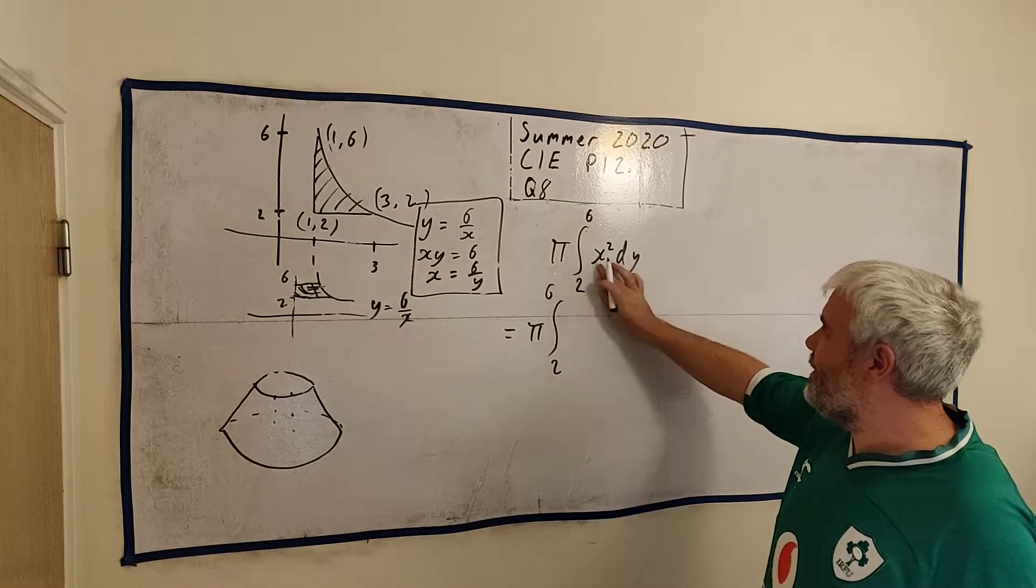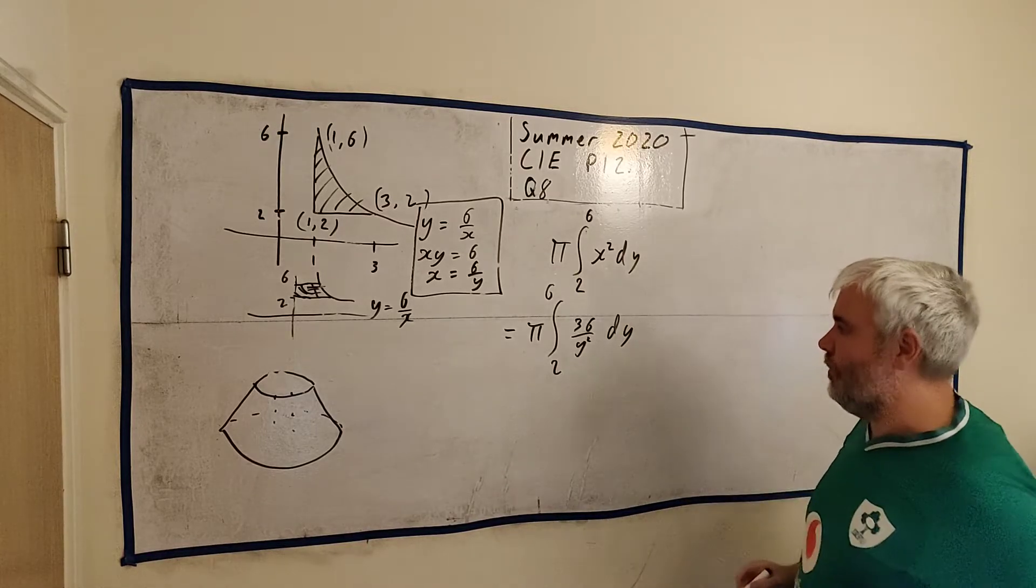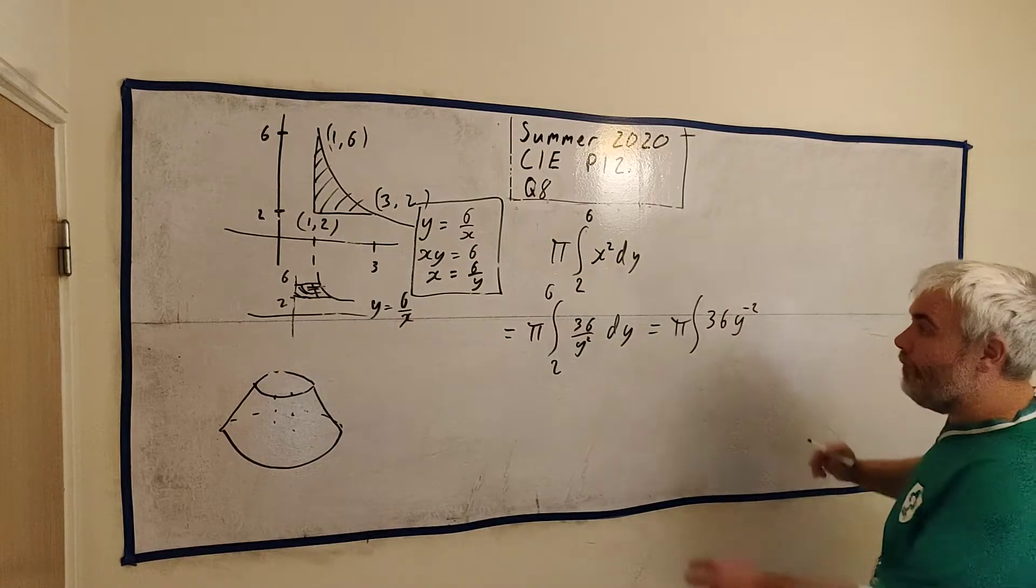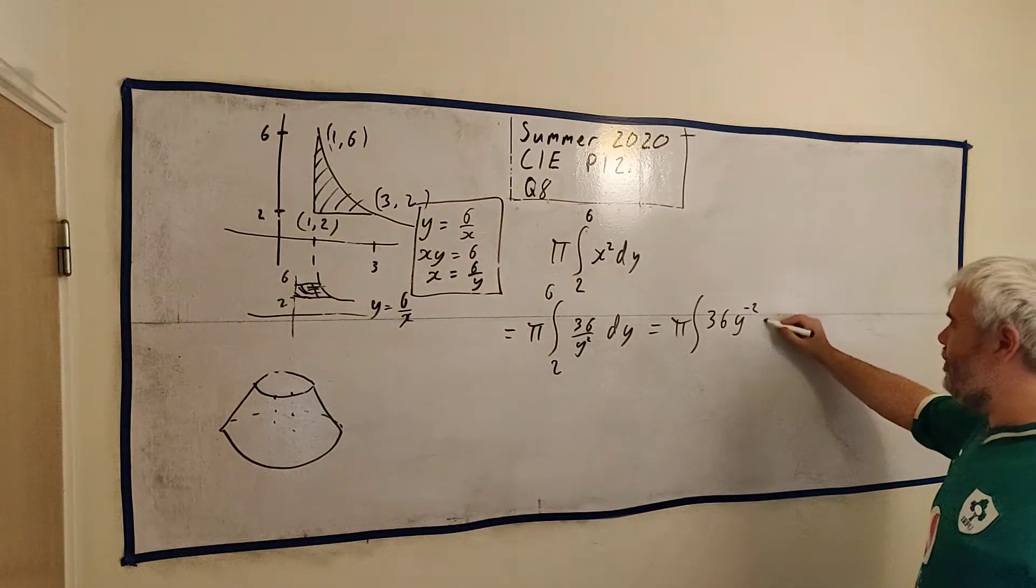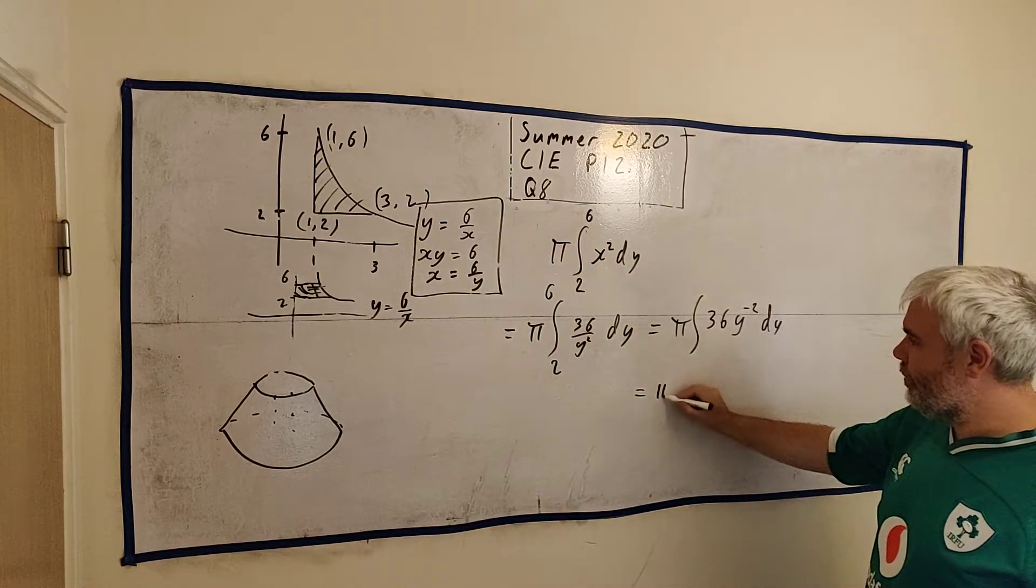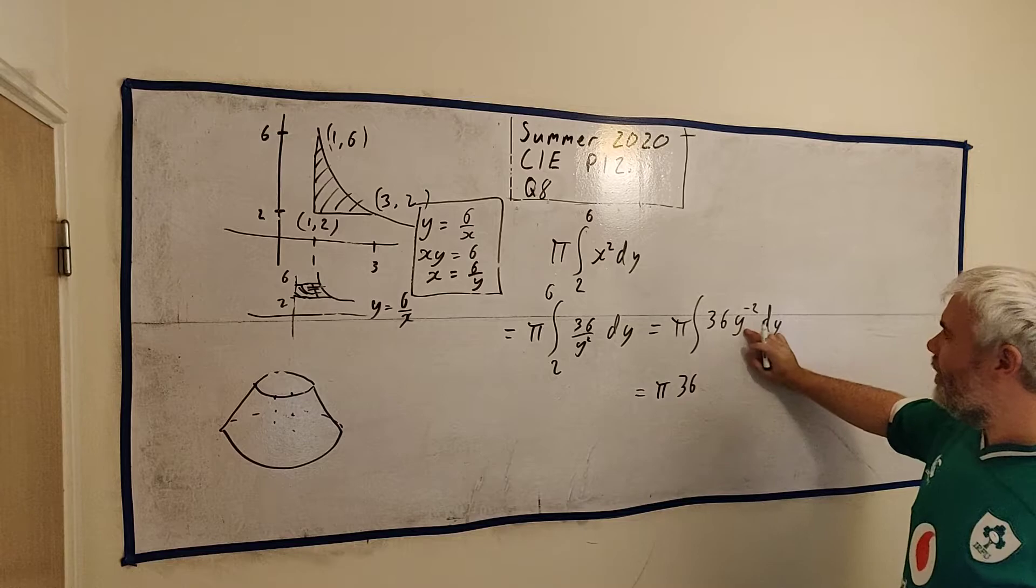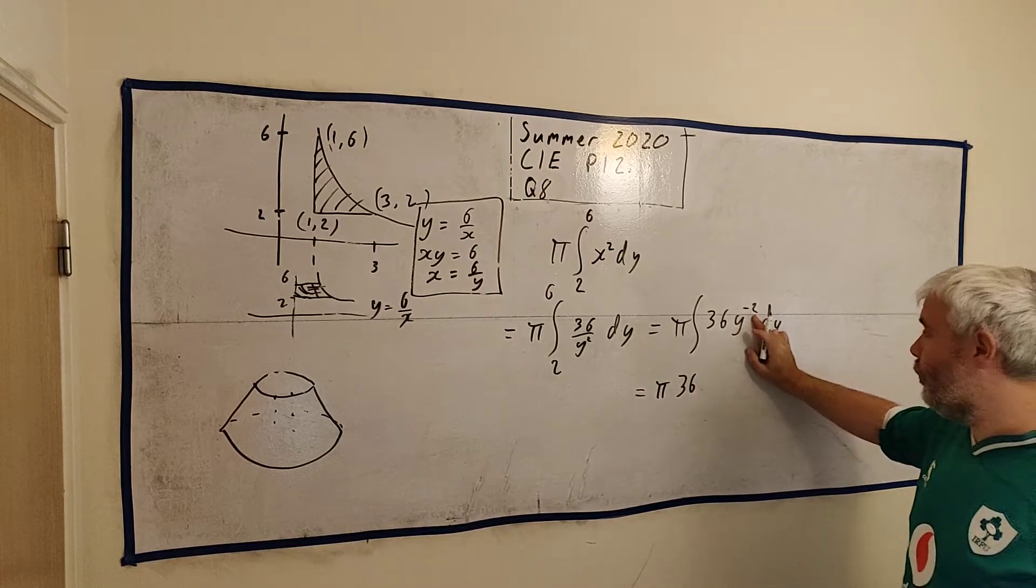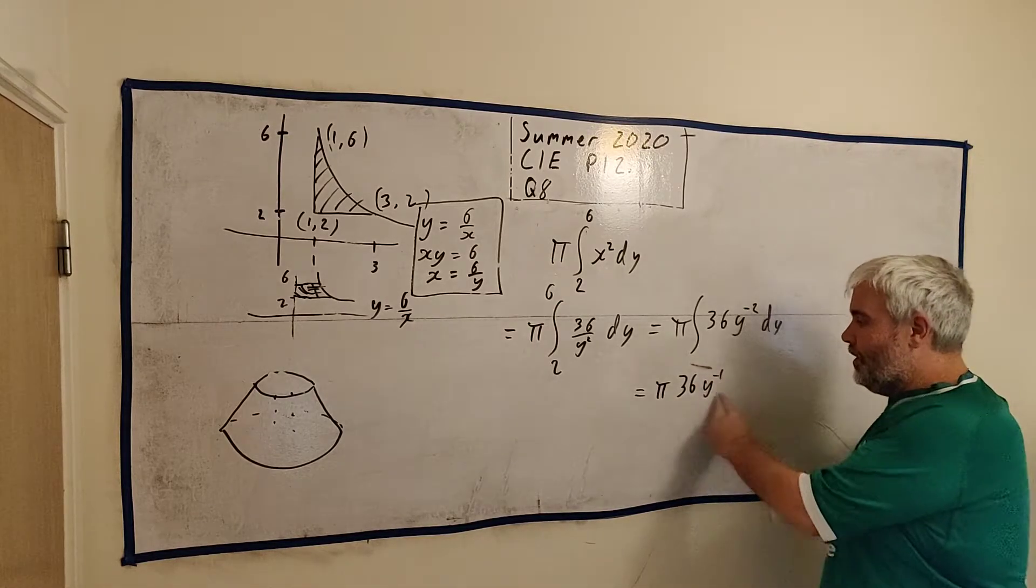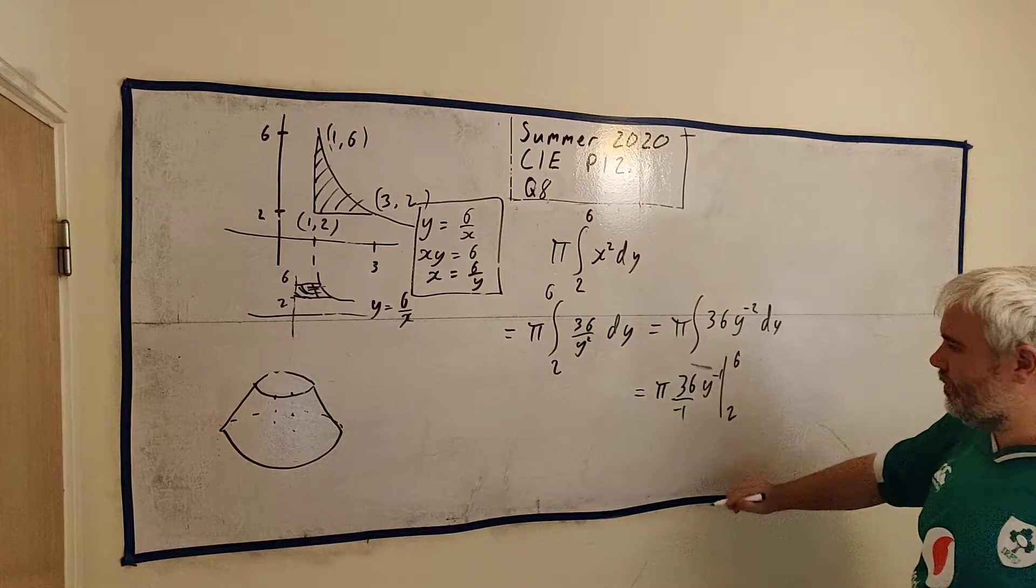Between two and six. Instead of x squared, I get 36 over y squared dy. This is something we can integrate. Let's make it a little easier for ourselves. Let's write it as 36y to the power of minus two. It's the same thing. Let's integrate this. It's equal to π 36. The integral of this, we add one onto this number above y, and that becomes minus one y to the power of minus one. Whatever the new number is, we divide by minus one.